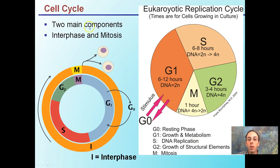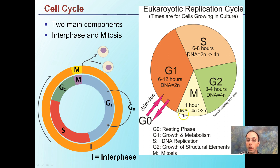The cell cycle has two main components: interphase and mitosis. Mitosis is the process of cell division. Interphase is a slightly different phase with subdivisions: G0, which is just a resting phase; G1, growth and metabolism; S, DNA replication; G2, growth of structural elements; and M, the mitosis phase. This gives an approximation of time for the eukaryotic replication cycle.